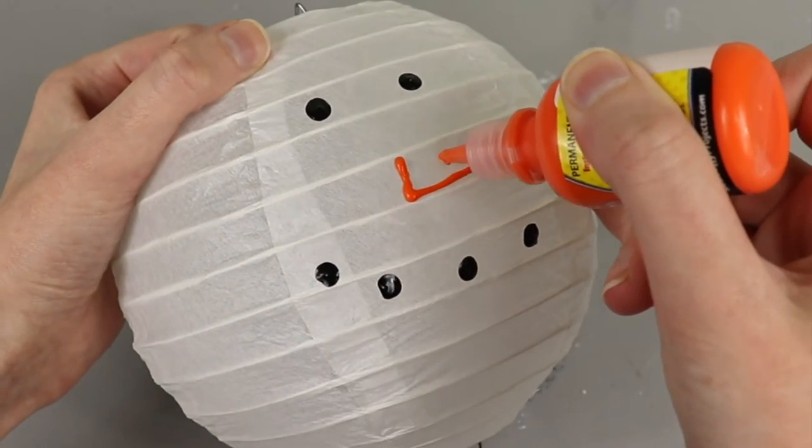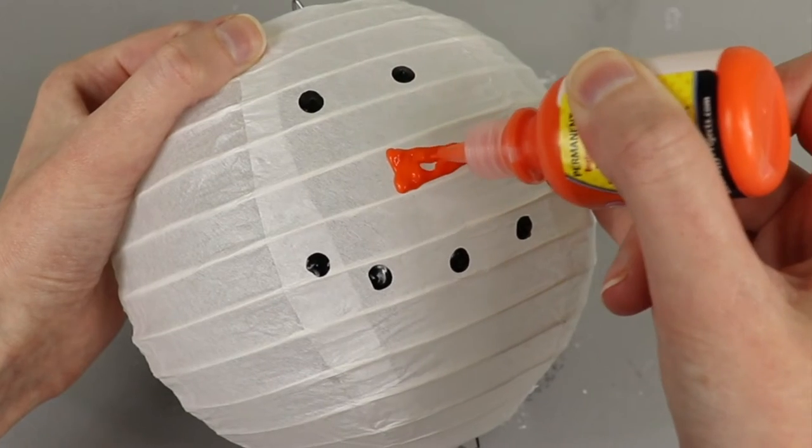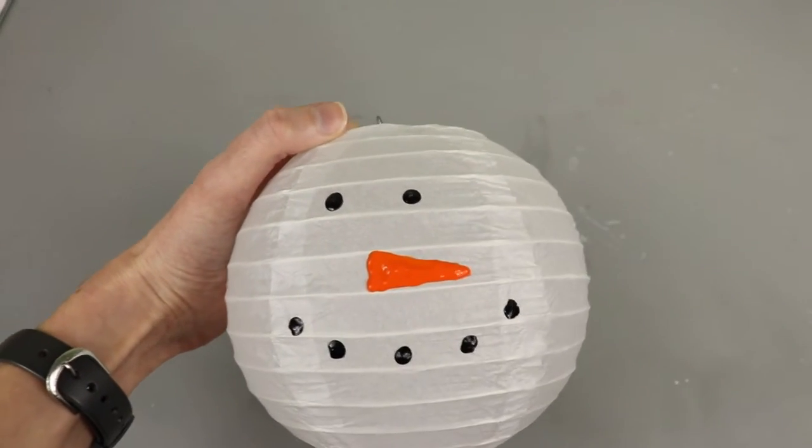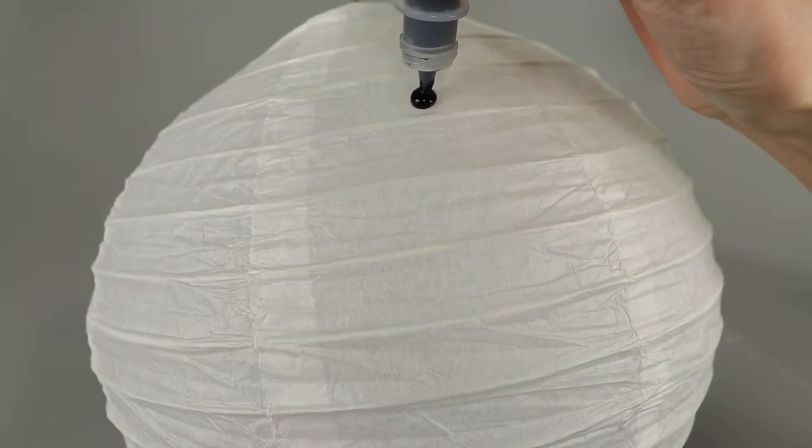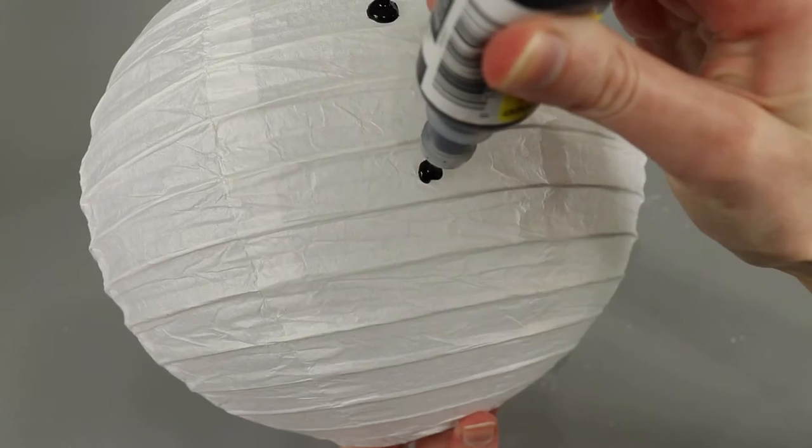So I'm holding my lanterns with the side that will line up in the front and adding eyes, a mouth, and a carrot nose with puffy paint to the littlest lantern. Then I put two buttons on the front of my medium lantern and three buttons on my largest lantern.